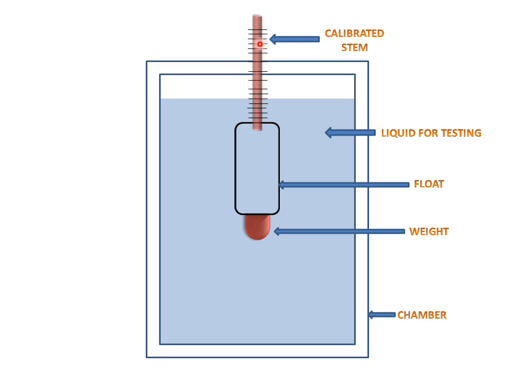In this method, this scale is used for measuring the density of the liquid, higher or lower, according to the float system moving up and down. This scale gives us directly the reading of the density or specific gravity of the liquid.